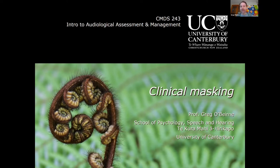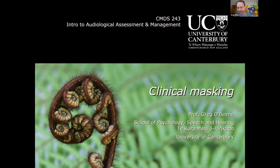There are cases where when we stimulate one ear, or attempt to stimulate one ear, we're actually stimulating both ears simultaneously, either at the same level or at a higher or lower level. This makes it ambiguous about which thresholds we're actually measuring. Clinical masking outlines the reasons why this cross hearing can occur — the transfer of signal between the ears — and how we resolve that ambiguity. That process is called masking.